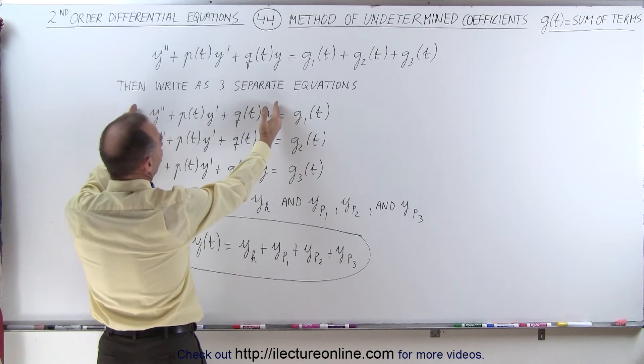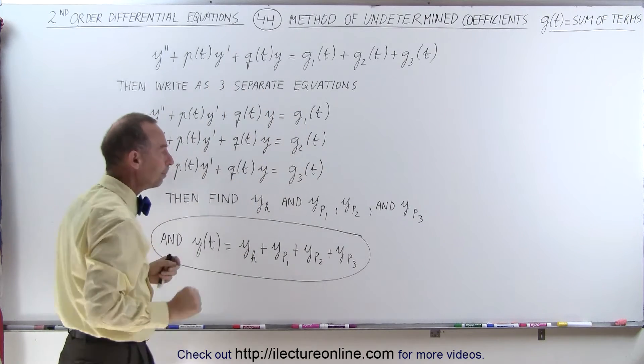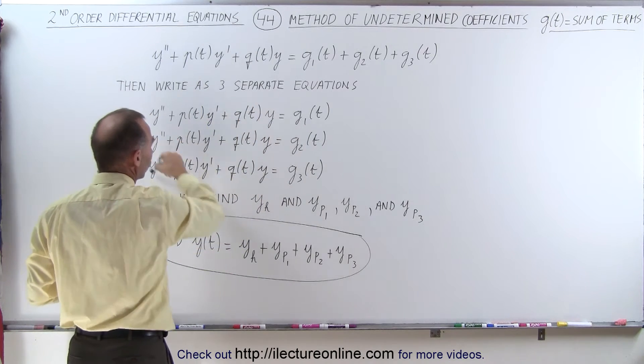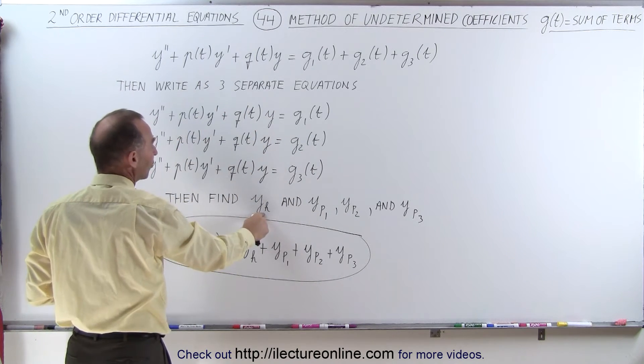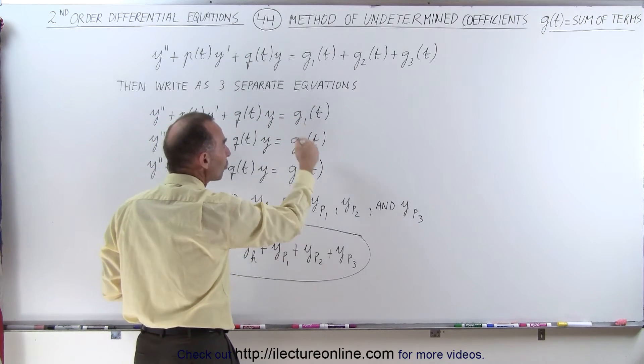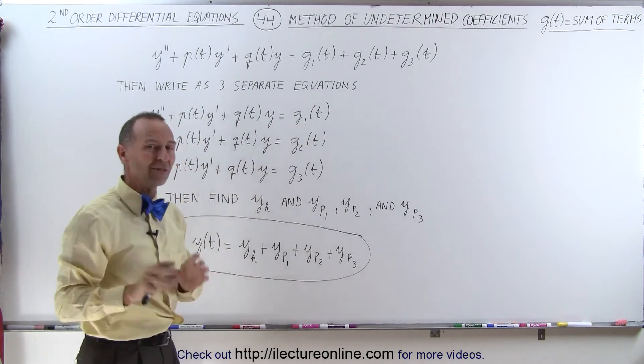Notice that this portion on the left side equation is always going to be identical. What we do then next is we're going to find the homogeneous part of the solution, over here, call y sub h, and then the particular solution in each of the three equations, separately.